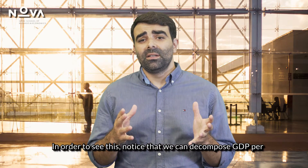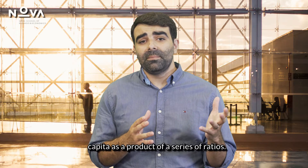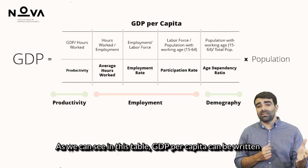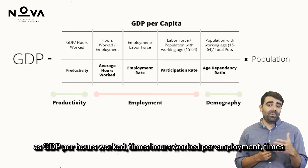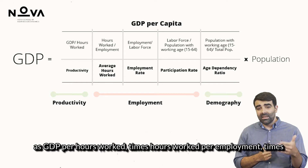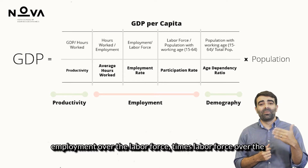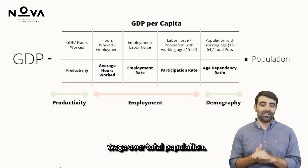In order to see this, notice that we can decompose GDP per capita as a product of a series of ratios. As we can see in this table, GDP per capita can be written as GDP per hours worked, times hours worked per employment, times employment over the labour force, times labour force over the population with working age, times population with working age over total population.